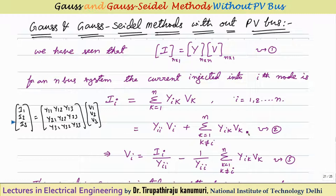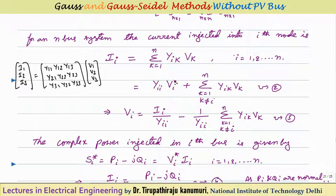From this we can calculate Vi. Rearranging and dividing by Yii gives: Vi = (Ii / Yii) − (1/Yii) · Σ(k=1 to N, k≠i) Yik·Vk. So we can write the voltage in terms of the current.